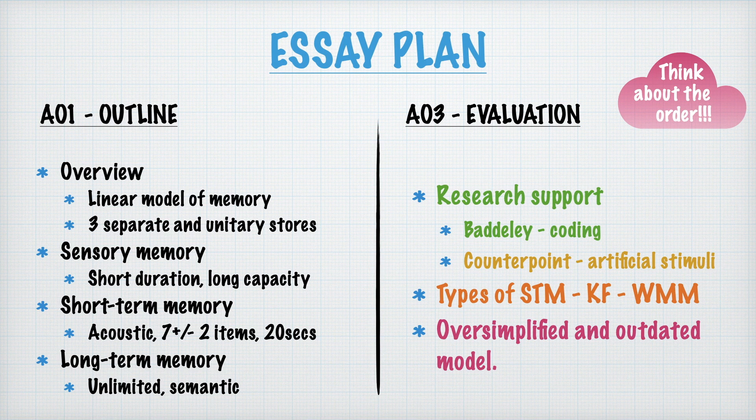My evaluation section is mainly limitations, because the multi-store model isn't great overall, but there is one strength in there. Remember to use your keywords in the outline — the stores are separate and they are unitary, and they each have their own individual characteristics in terms of coding, capacity, and duration. Those things should definitely get a mention in some form or another.